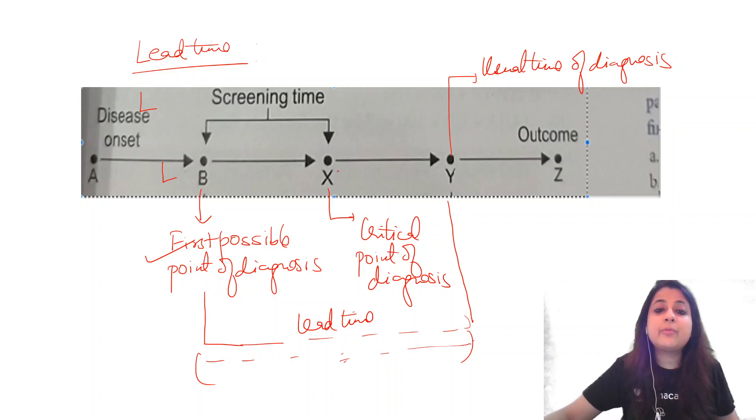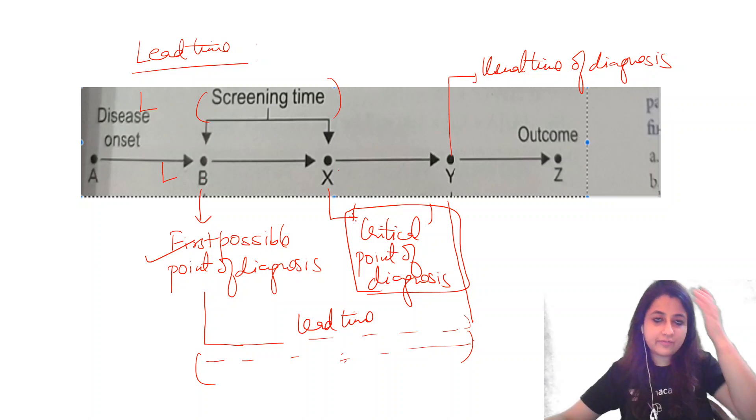Look at the interval between point B and X. This is known as screening time. First possible point of diagnosis and the interval between critical point of diagnosis. If you have to apply a screening test and you want to gain a substantial advantage, substantial survival, prolongation in survival, it must be applied till the point X. That is what is critical point of diagnosis.